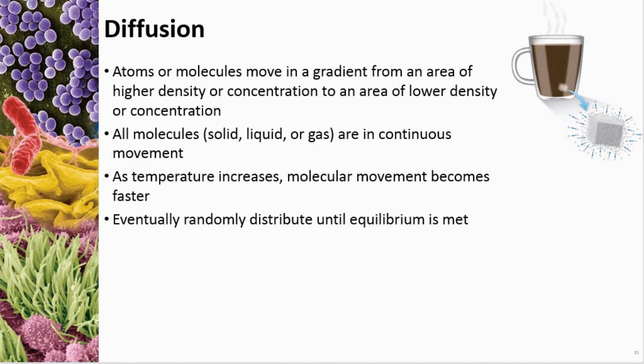Diffusion is not one-sided — it's all the molecules. When you put a drop of food coloring in a glass of water without stirring, eventually the food coloring distributes itself evenly throughout — this is reaching equilibrium. Once equilibrium is reached, molecular movement doesn't stop, but for every molecule that moves one way, another moves the opposite way, so there's no net movement.